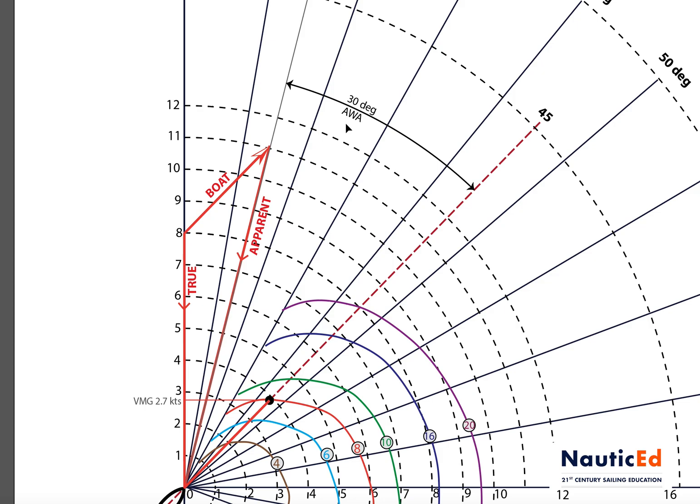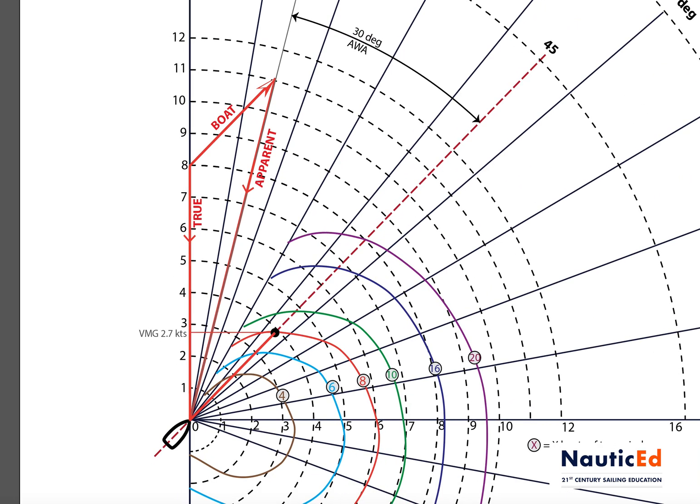Looking at the true wind direction and the apparent wind direction, the true wind is aft of the apparent wind. What that means is if you stand on the boat, point your arm toward the apparent wind, then move your arm to point toward the true wind, your arm would be moving aft. That should clear up the common confusion when people say the true wind is aft of the apparent wind.